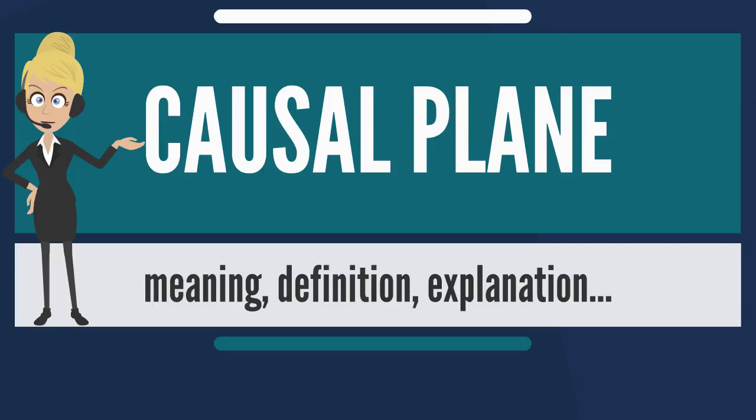The complex metaphysics of the channeled entity Michael includes a description of the universe in terms of seven planes: the physical plane, the astral plane, the causal plane, the akashic plane, the mental plane, the messianic plane, and the buddhaic plane.